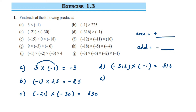The next one: minus 15 multiplied by 0 multiplied by minus 18. I'm going to directly write down the answer: 0. Whenever you multiply any number with 0, it gives you 0. And 0 does not have any sign — it is neither positive nor negative. So the answer is 0.